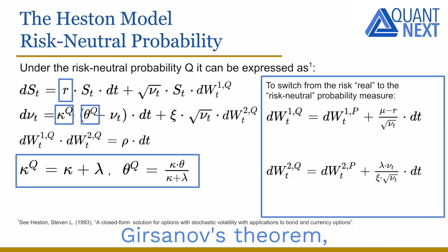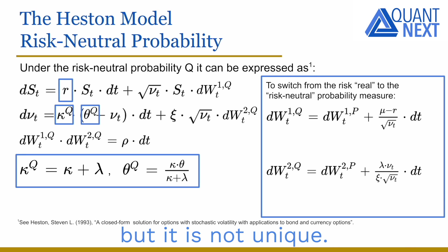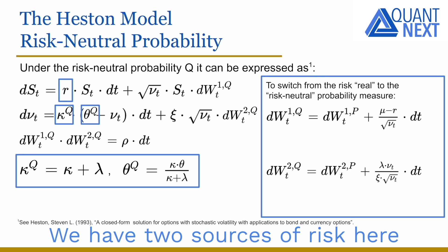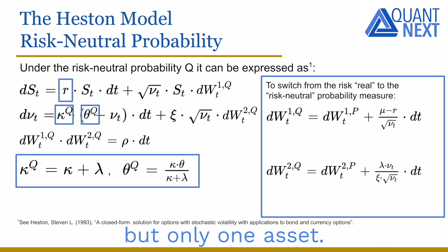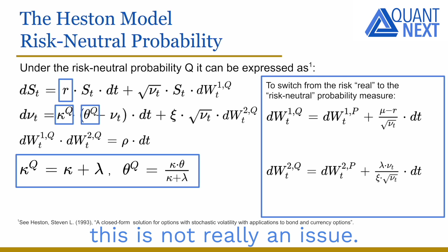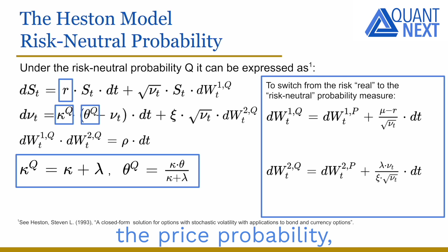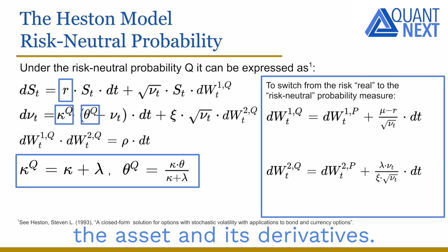With the two-dimensional Girsanov theorem, we can show that the risk-neutral probability Q exists, but it is not unique. The market is not complete — we have two sources of risk with the two Wiener processes, but only one asset. In practice, this is not really an issue. The risk-neutral probability Q is the pricing probability; it is the probability used to price the asset and its derivatives.